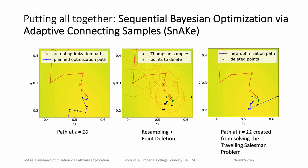Putting Thompson sampling, the traveling salesman problem, and point deletion together, we obtain Sequential Bayesian Optimization via Adaptive Connecting Samples, or SNAKE. The following figure details all three steps that SNAKE has to do at each iteration. The leftmost picture shows the actually taken optimization path in red, and the planned one in blue.